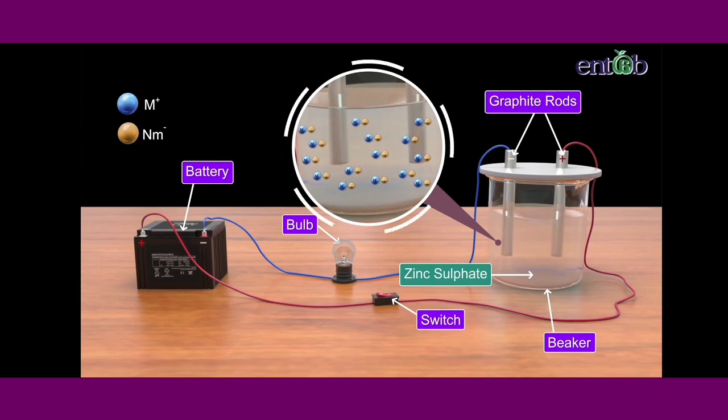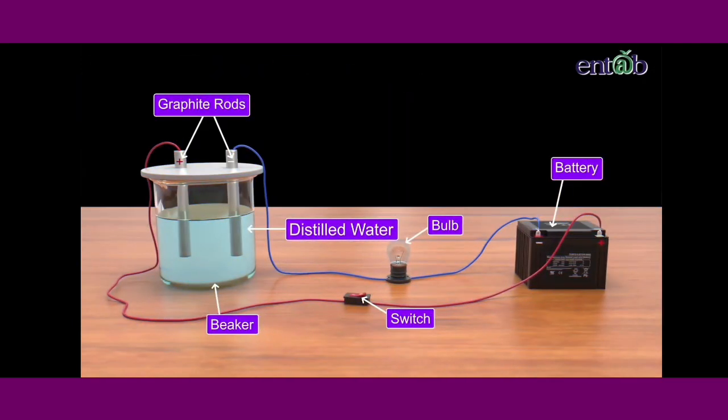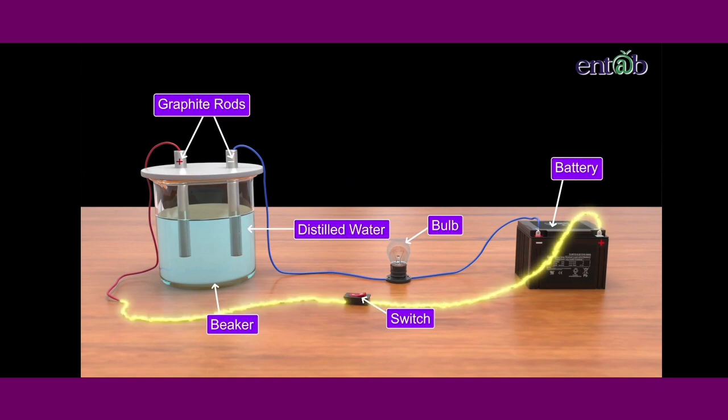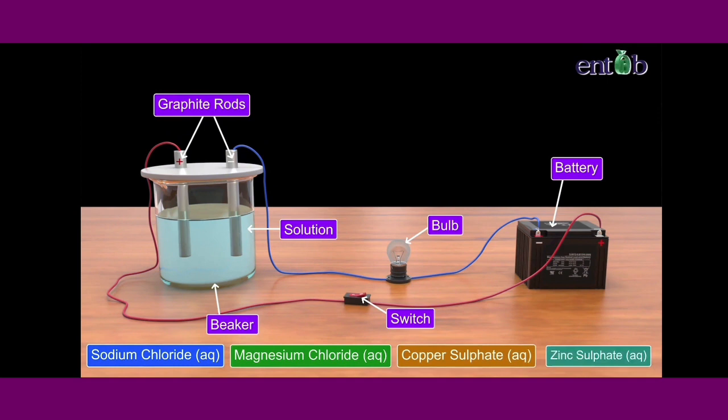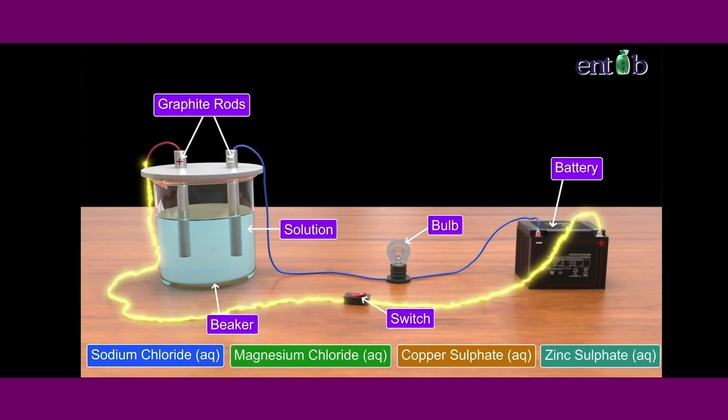The electrical conductivity through a solution involves the movement of charged particles. Thus, the ions in the solution move within the solution carrying their charge towards the oppositely charged electrode, thus allowing electricity to pass through the solution. We note that distilled water, which is a form of pure water, does not conduct electricity, whereas the solutions of all the salts taken for the activity conduct electricity.